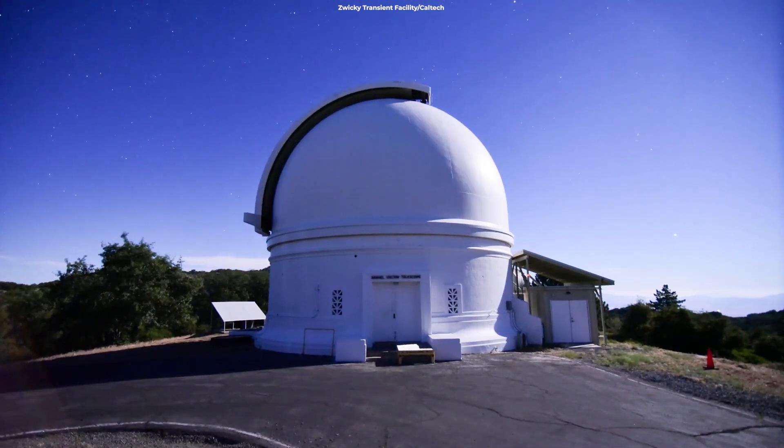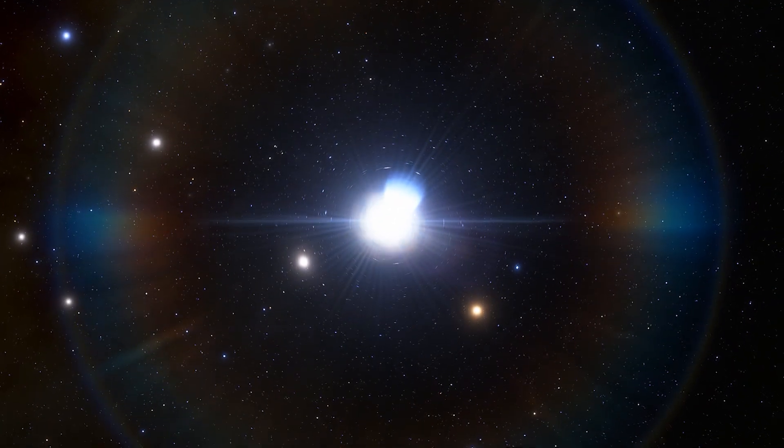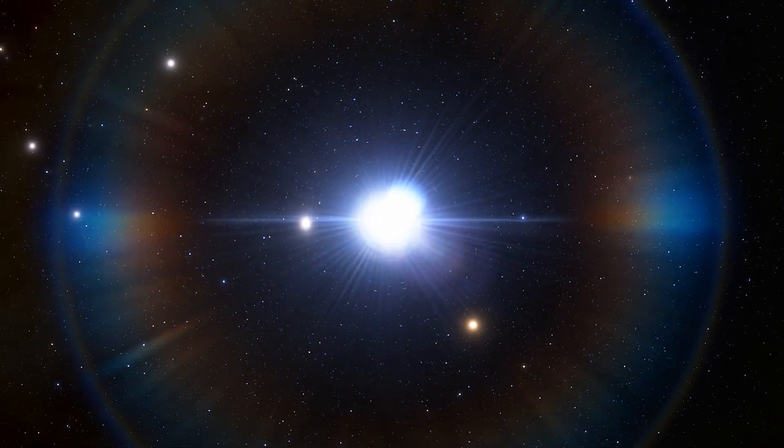A mysterious bright flash recently observed by the Zwicky Transient Facility appears to be a black hole jet pointing straight toward Earth. Earlier this year, it detected a unique flash in a region of space where no such light had been previously observed.